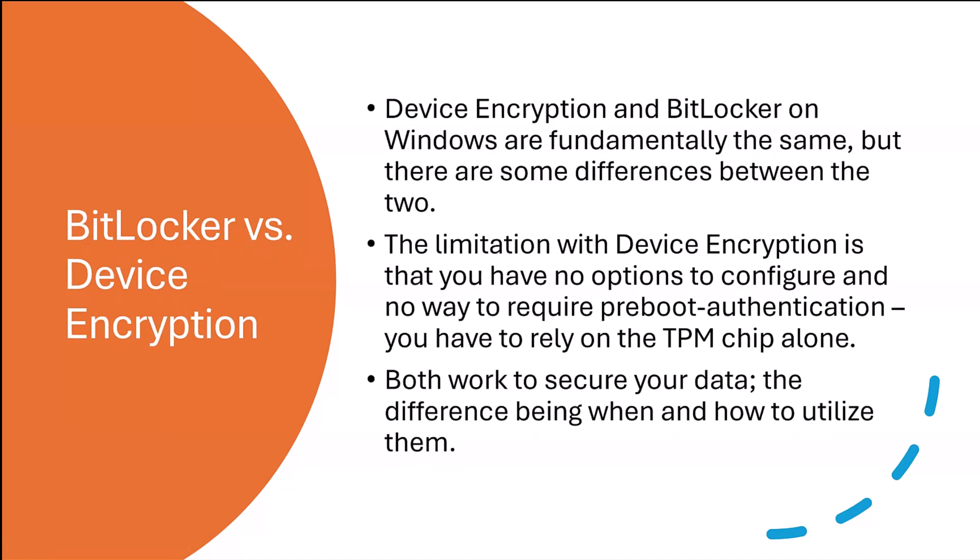BitLocker vs. Device Encryption. Device Encryption and BitLocker on Windows are fundamentally the same, but there are some differences between the two. The limitation with device encryption is that you have no options to configure and no way to require pre-boot authentication — you have to rely on the TPM chip alone. Both work to secure your data, the difference being when and how to utilize them.